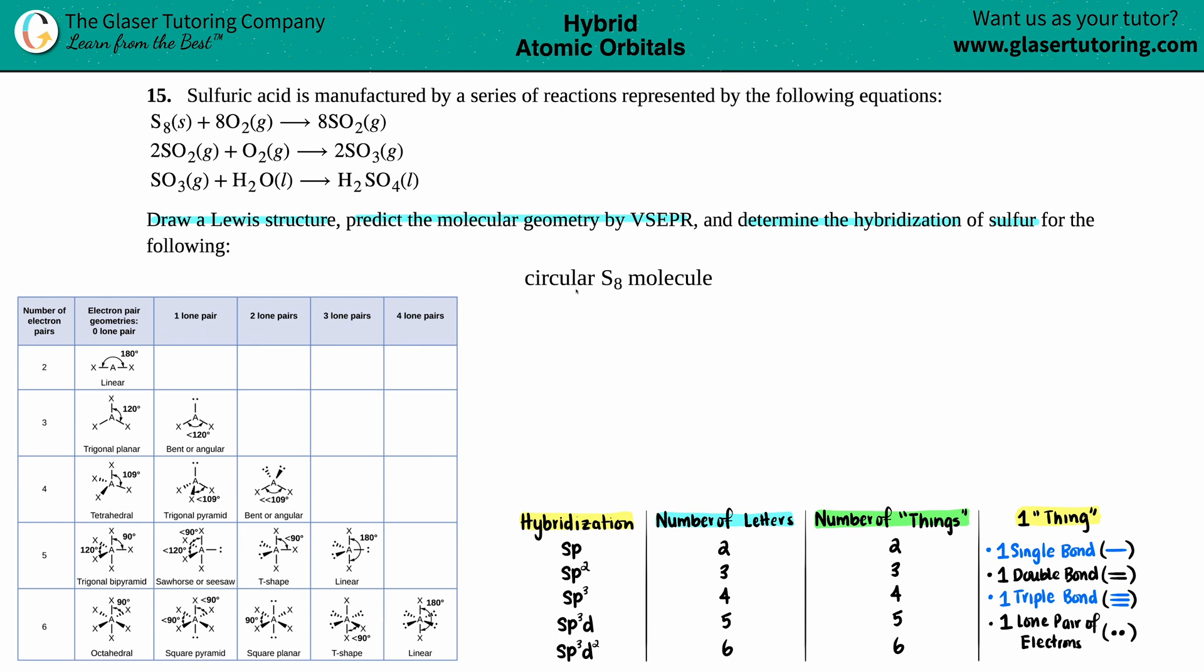So in this case, we're going to be doing all of that for circular S8 molecule. Okay, so do we really need these reactions? No. The thing is, they gave us a molecule here, S8. We need to draw its Lewis structure, predict the geometry, determine the hybridization.